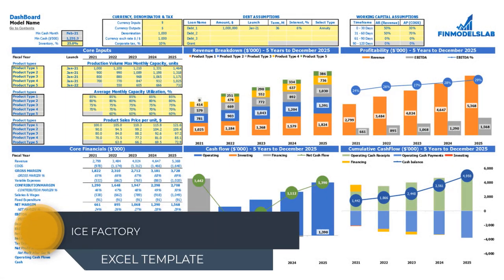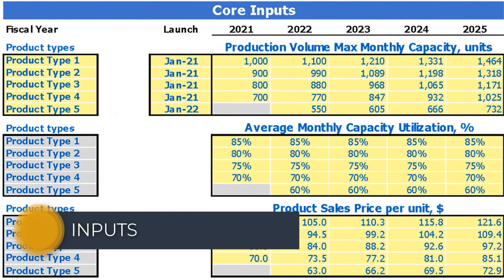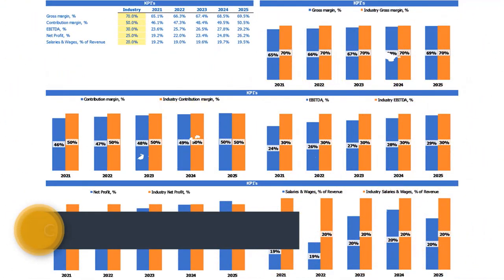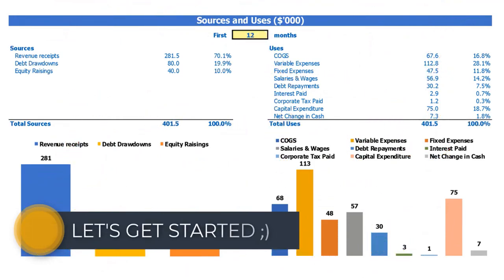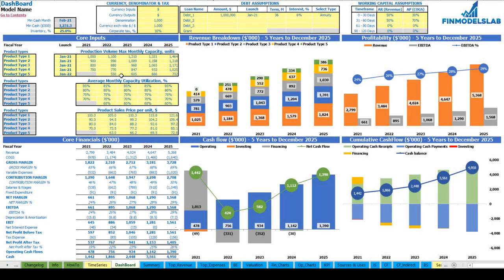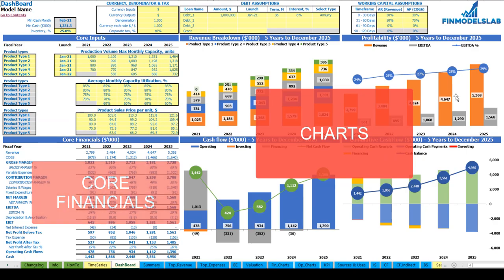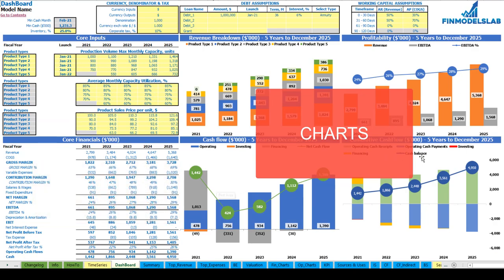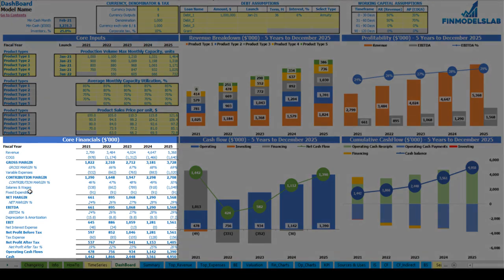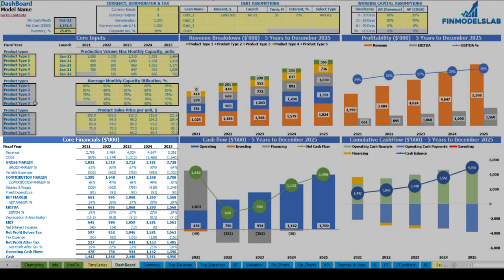Hello, in this video I'm going to walk you through the financial model Excel template. I will show you the main inputs, the core outputs, reports and charts. So let's get started. On the dashboard you can set up your core inputs or drivers for the model, review the core charts such as revenue breakdown, profitability, cash flow and cumulative cash flow, and also review the core financials which is a summary of your financials by years.